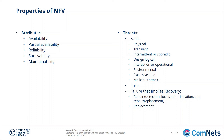Faults were classified as: physical or hardware-based; transient, meaning a temporary fault; intermittent or sporadic, a recurrent fault; design or logical, a human-based fault made during definition of specifications or implementation; interaction or operational, an accidental fault happening during human interaction with the system; environmental, a fault caused by the environment where the system is located; excessive load, a fault due to load greater than system capacity; and malicious attack, a fault caused by an external attacker.